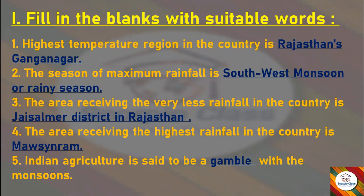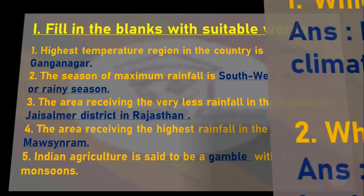The area receiving the very least rainfall in the country is Jaisalmer district in Rajasthan. The area receiving the highest rainfall in the country is Mawsynram. Indian agriculture is said to be a gamble with the monsoons.